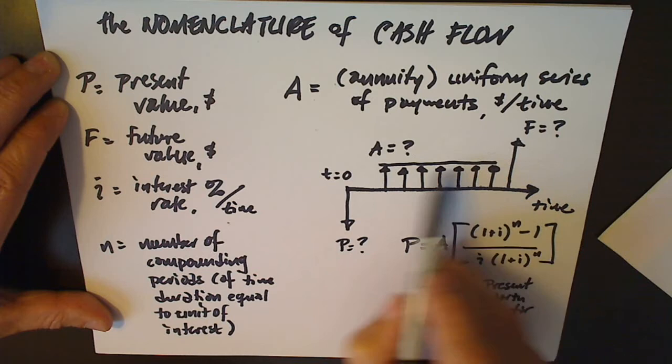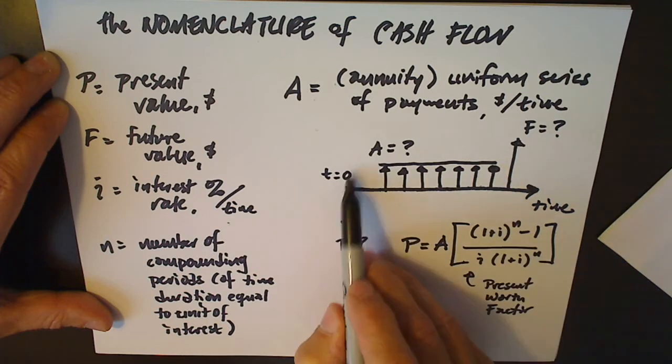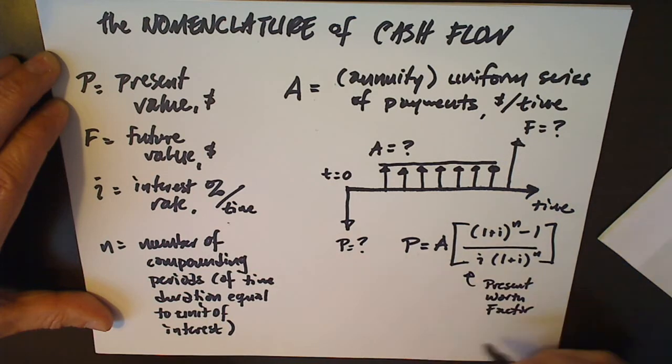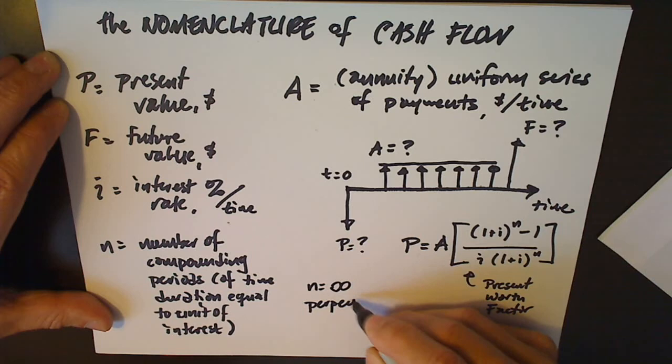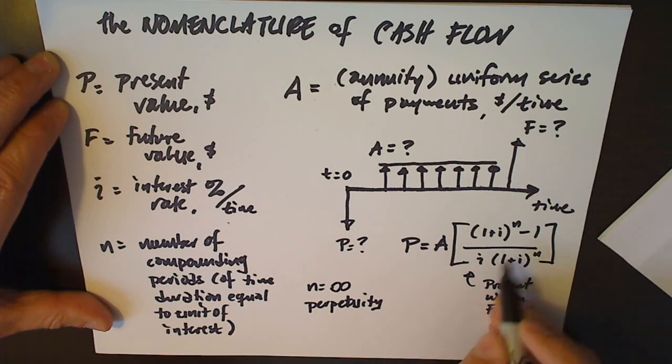that discounts the value of this uniform series to P. It's possible that when n is infinity, we refer to that as perpetuity. When the number of compounding periods is infinity, you'd think that P must also be infinite, but it's not.